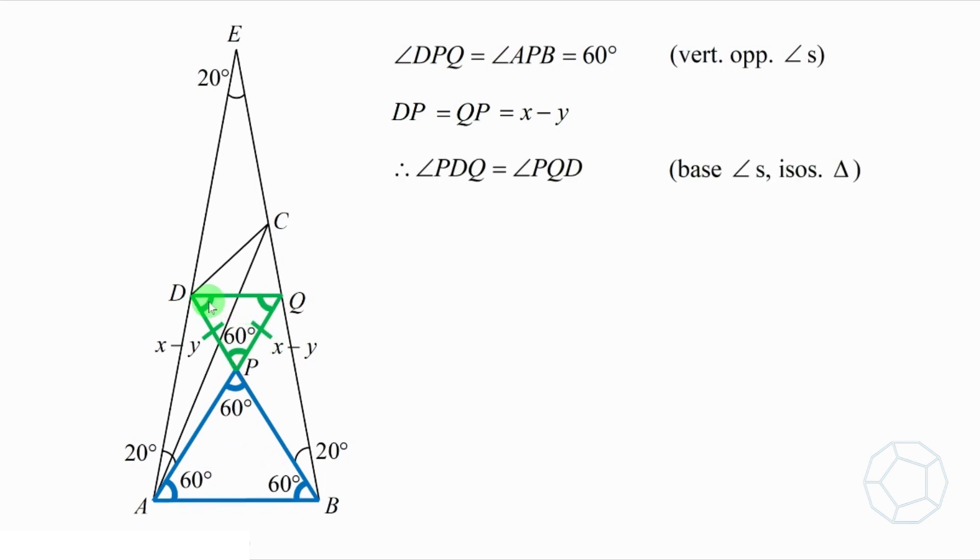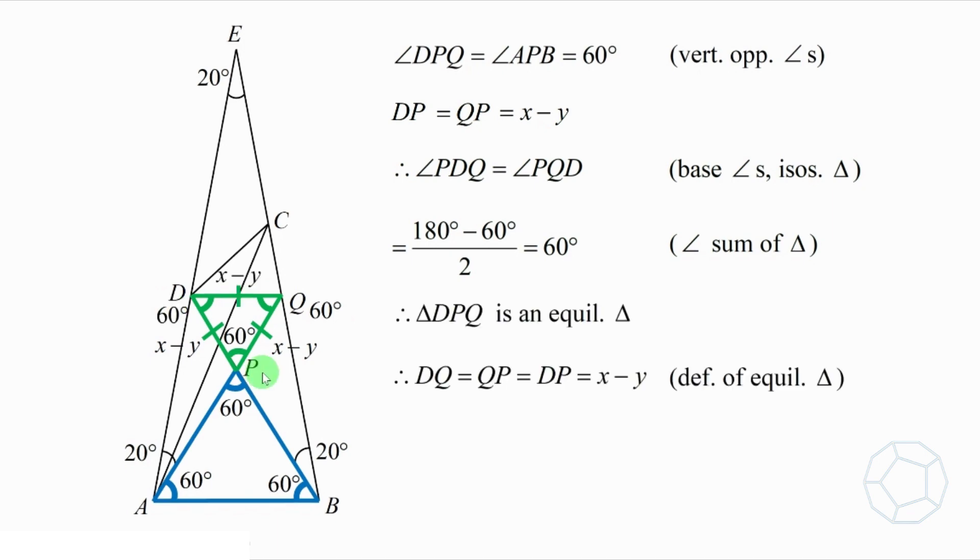By base angles isosceles triangle, angle PDQ and angle PQD are equal. Using angle sum of triangle, both of them are 60 degrees. So all three angles are 60 degrees. That means the green triangle DPQ is an equilateral triangle. All three sides are of equal length. That is, DQ is also X minus Y.